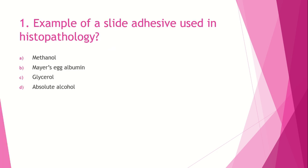Question number 1: What is the example of a slide adhesive used in histopathology? The options are: option A, methanol; option B, Mayer's egg albumin; option C, glycerol; and option D, absolute alcohol. The answer for this question is option B, Mayer's egg albumin.